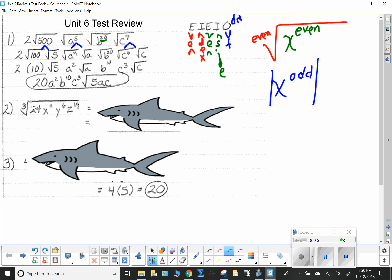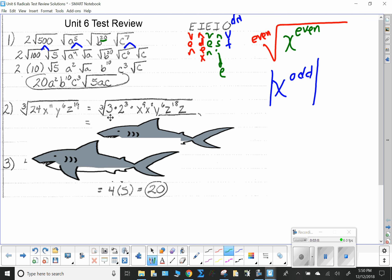I now have the cube root of 24x to the eleventh y to the sixth z to the nineteenth. I want powers that are divisible by 3. So when I break this up, I get 3 times 2 cubed. Remember that 24 is 3 times 8, 8 is 2 cubed. x to the eleventh is x to the ninth x squared, y to the sixth, z to the eighteenth and z.